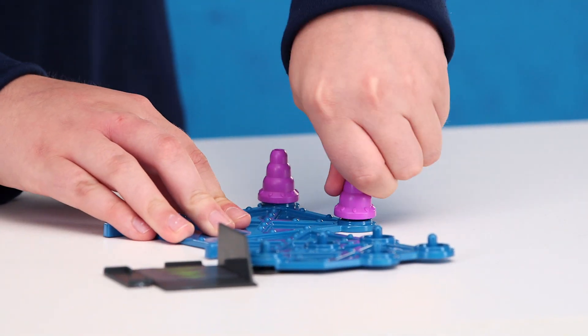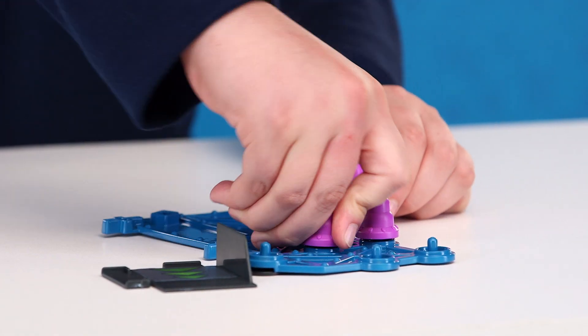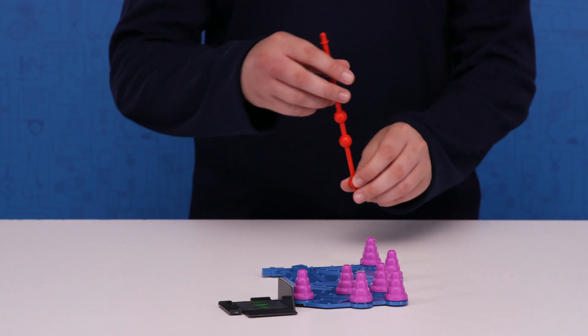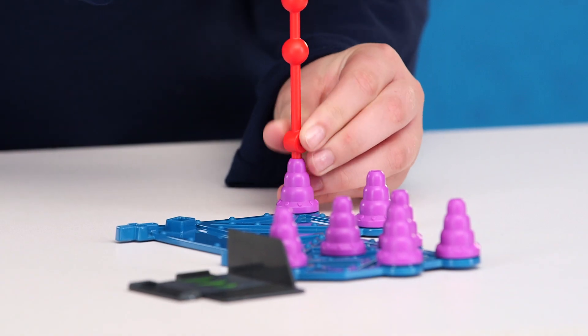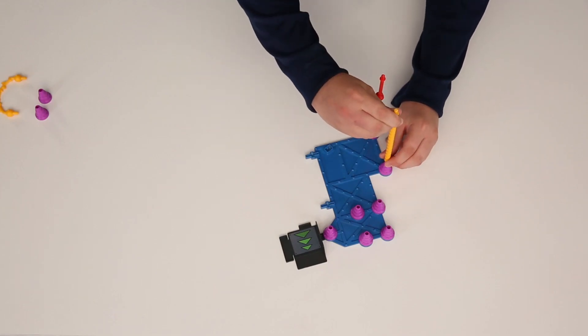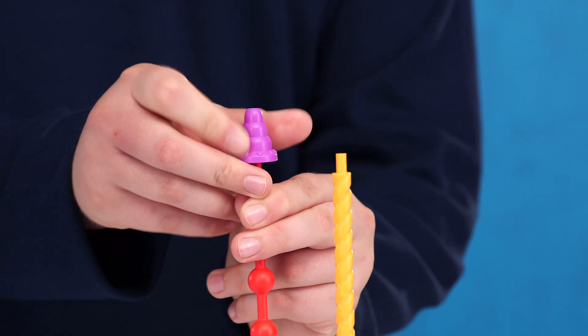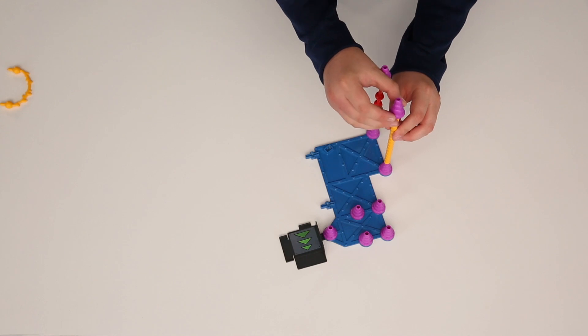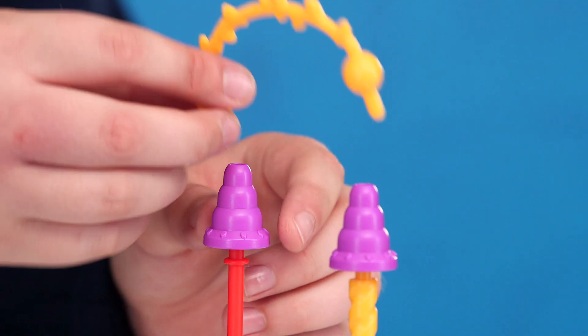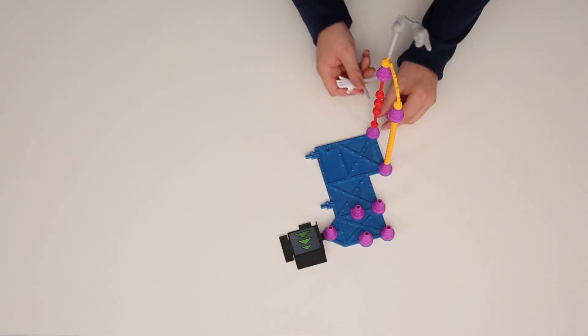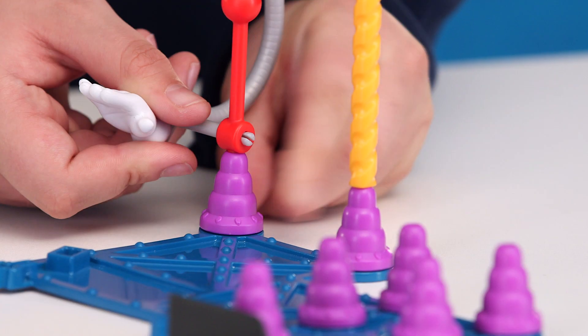Next, add seven purple connector cones to the blue frame as shown. Insert the large red pole into the purple connector cones as shown. Then insert the yellow spinner track into this purple connector. Add a connector to the top of each pole and connect them with the small electric bolt. Next, add the helping hand to the red pole.